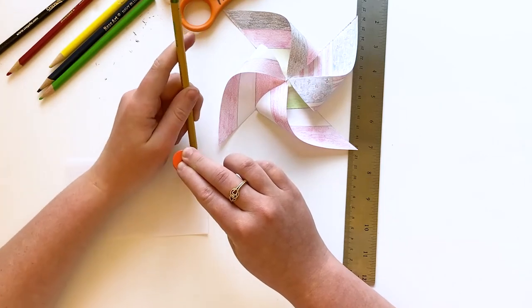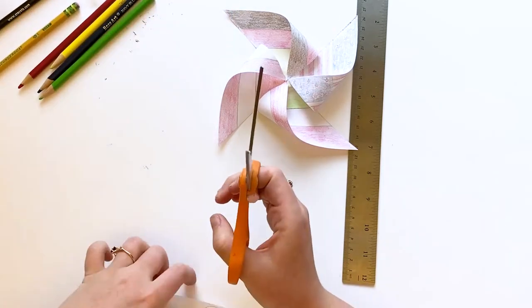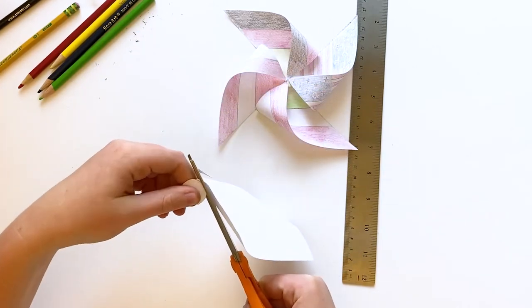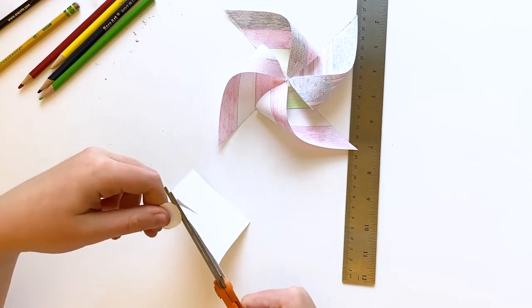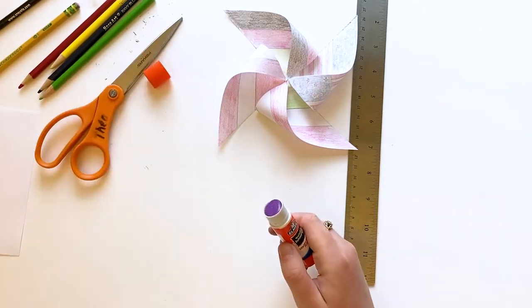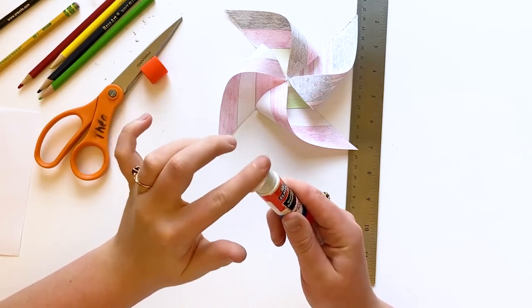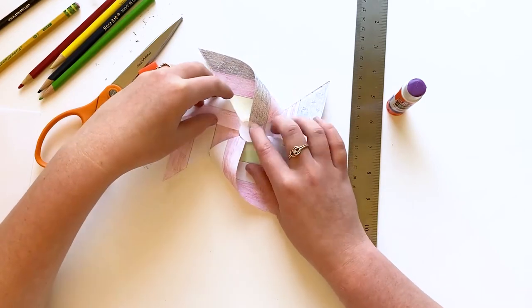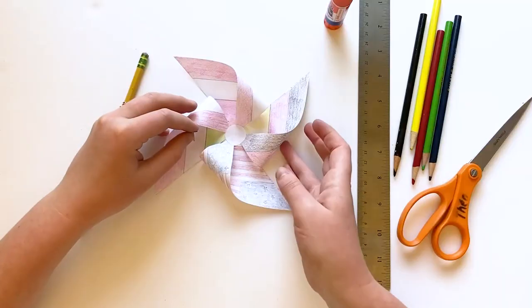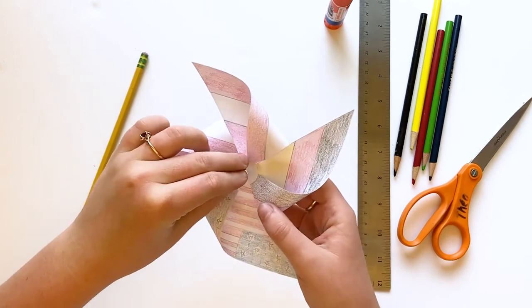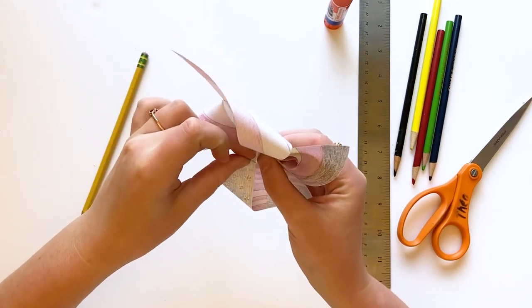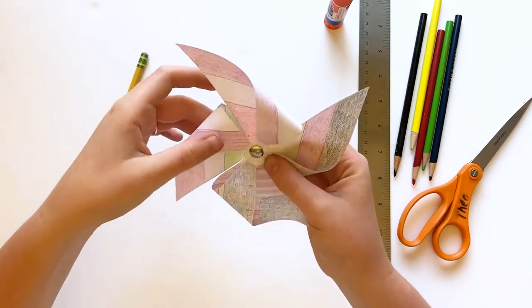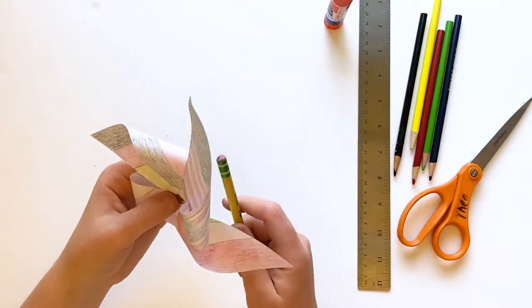Using the leftover paper, draw a small quarter-sized circle. Cut this out and glue it onto the center of the pinwheel. Use a thumbtack to poke a hole in the center, being careful not to prick your finger. Then, press the tack and pinwheel into the side of a pencil, just below the eraser.